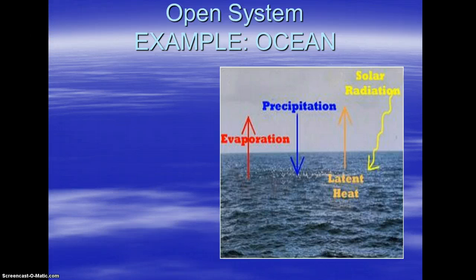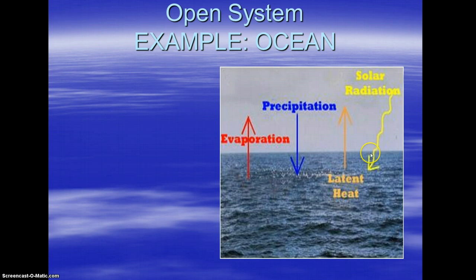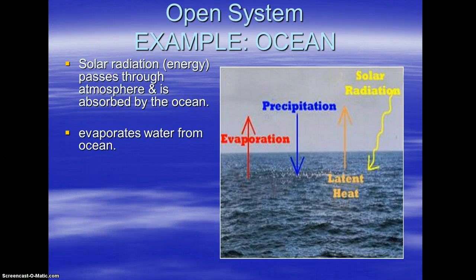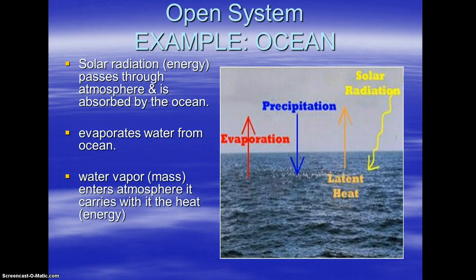This slide is really just showing another example of the ocean being an open system. You have evaporation and precipitation bringing matter into the system, and solar radiation and latent heat leaving. Energy can be exchanged with either an open or a closed system, but matter can only be exchanged with an open. Solar radiation passes through the atmosphere and is absorbed by the ocean — that's energy coming in. Water evaporates from the ocean — that's matter going out. And the water vapor enters the atmosphere, carrying heat with it, so that's more energy.